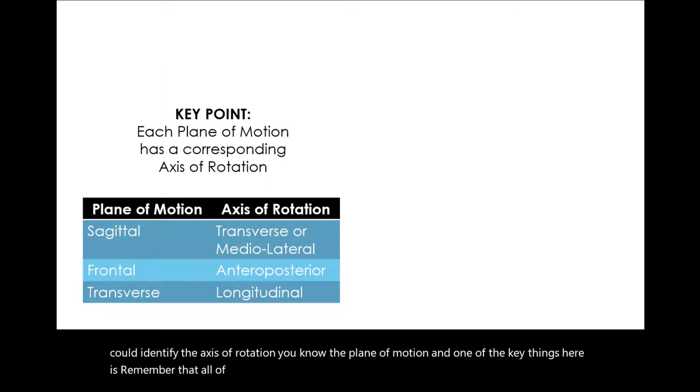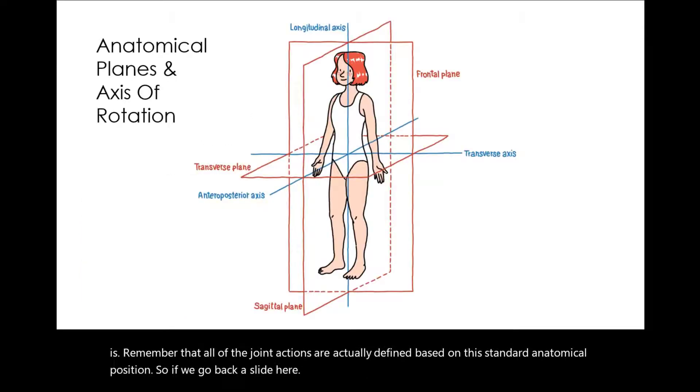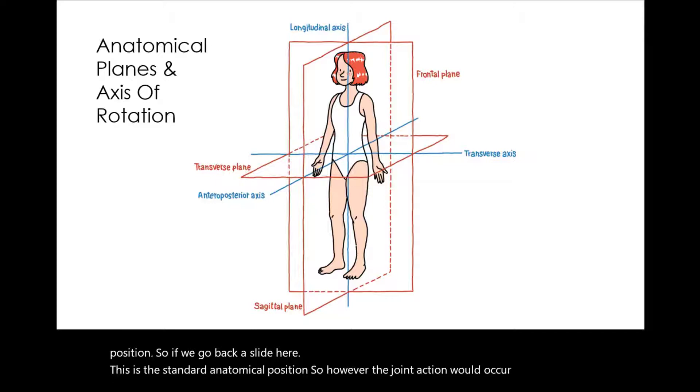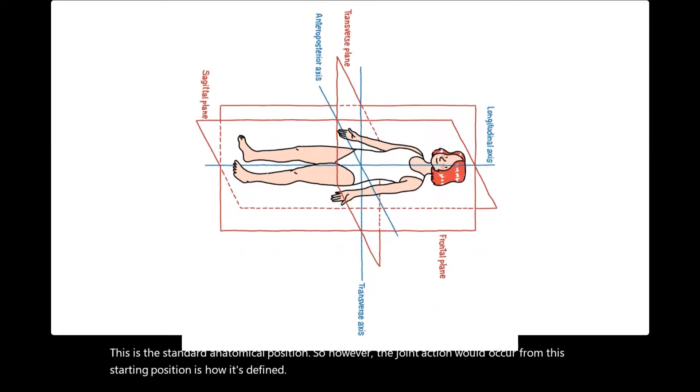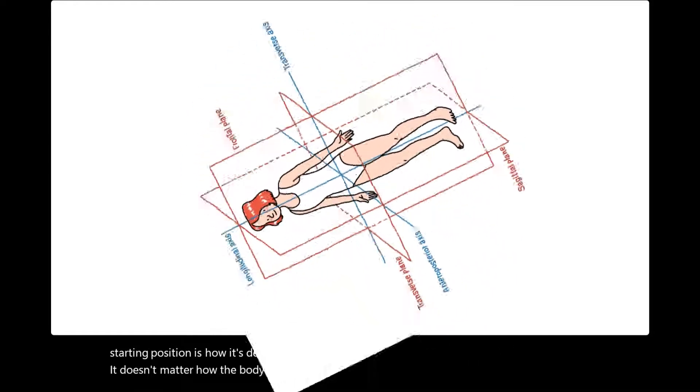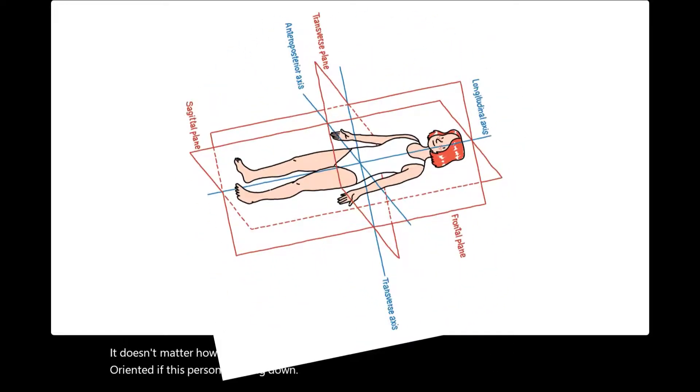One of the key things here is remember that all of the joint actions are actually defined based on this standard anatomical position. However the joint action would occur from this starting position is how it's defined. It doesn't matter how the body is oriented. If this person is laying down, the joint action still occurs in this corresponding plane of motion.